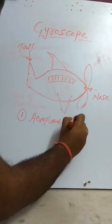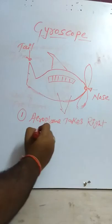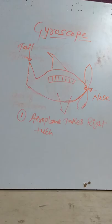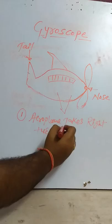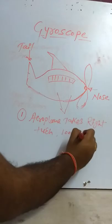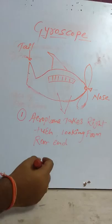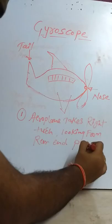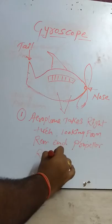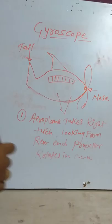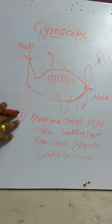The airplane takes a right turn, looking from the rear end, and the propeller rotates in counterclockwise direction. To understand this condition, we need to use the right hand thumb rule for finding the exact position of the aeroplane after taking the right turn.